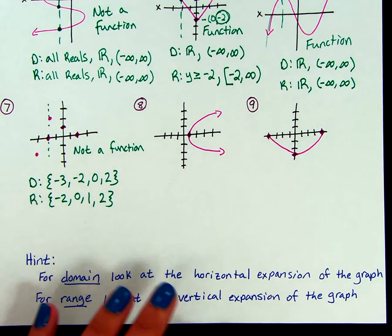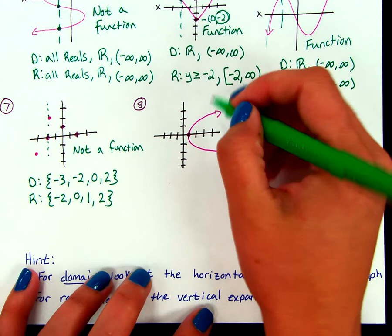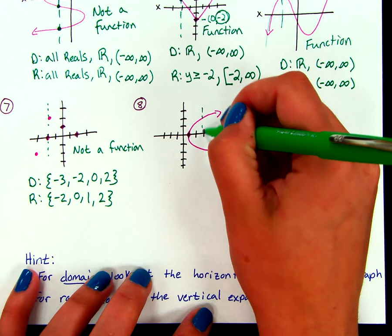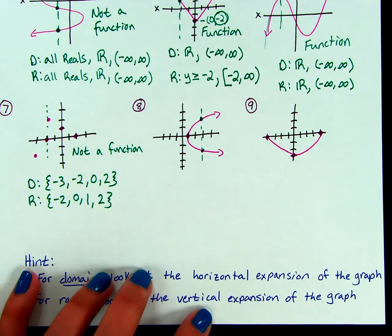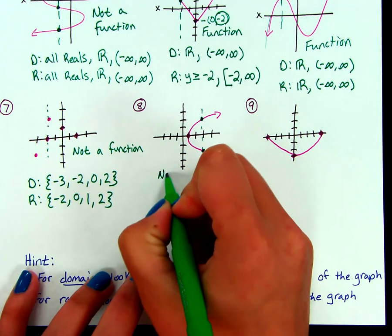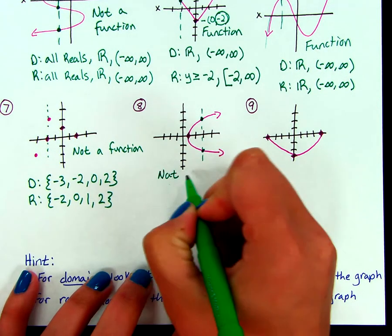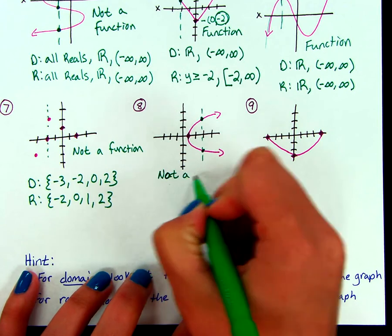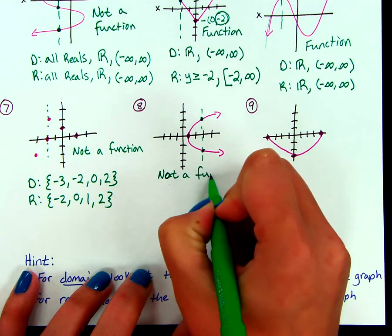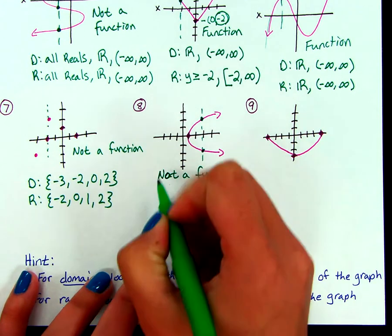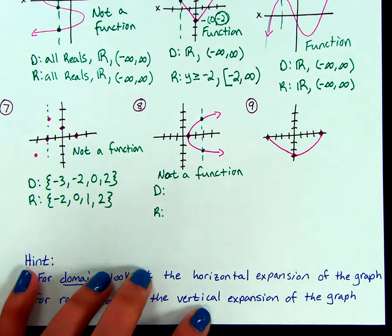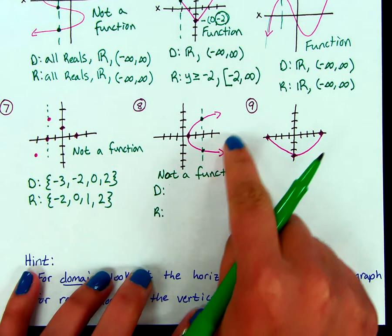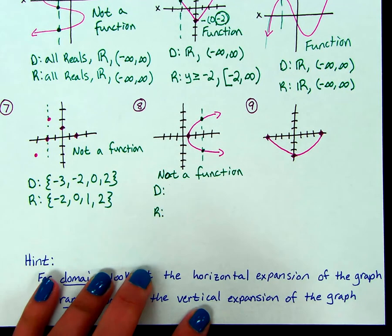Next one. Vertical line test — I can draw my vertical line and I'm going through twice this time. So this is not a function. But I can still always find domain and range, because domain and range describe a relation. Even though this is not a function, it is still a relation.